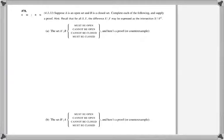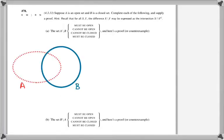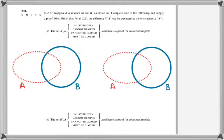Problem 78 asks you to consider an open set A and a closed set B. The question is: what can we say about the set differences A minus B and B minus A? Do those have to be open, do they have to be closed, or possibly not?